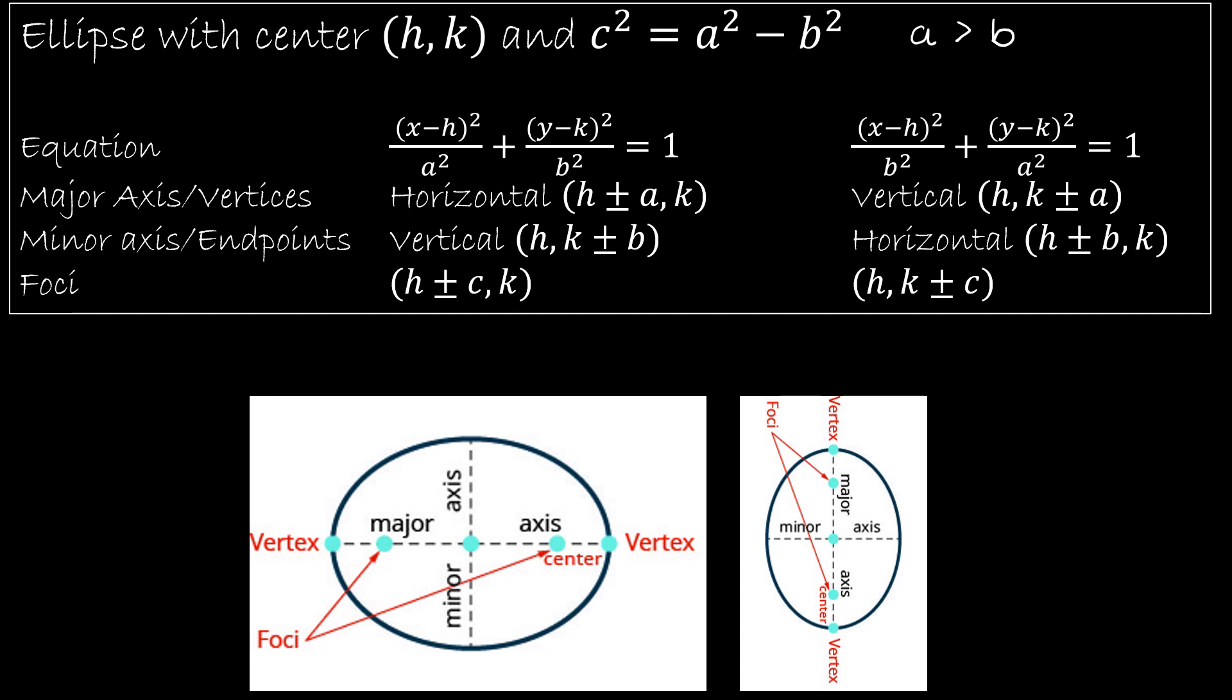So what else do we need to know? The equation for an ellipse, again, looks like that of a circle, except that it's equal to one. And wherever the a value is, wherever the larger value is, that's where your major axis is going to occur. So notice on the first one, my a is below the x and the major axis is on the x-axis or parallel to the x-axis.